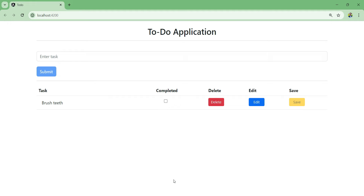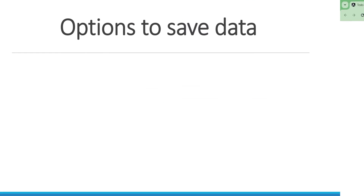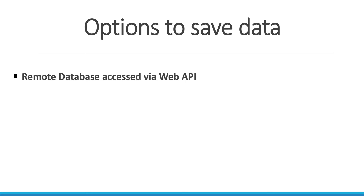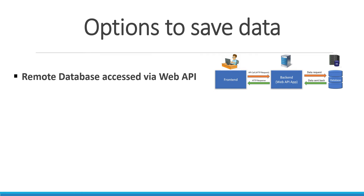We will modify this application so it saves data. Let's look at our options. Our first option would be to save the data in a remote database and access it via a web API. Your browser sends an HTTP request to the web API with an instruction, and the web API uses those instructions to delete, update, or create a new record.